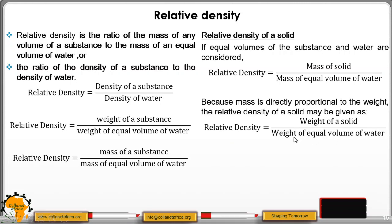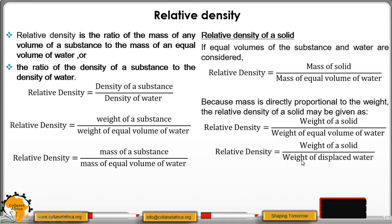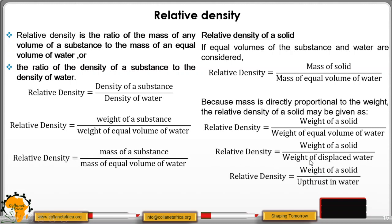The weight of equal volume of water is the weight of displaced water — the water displaced by the solid. This weight of displaced water is the same as the upthrust. So our equation reduces to: relative density equals the weight of a solid divided by the upthrust in water.